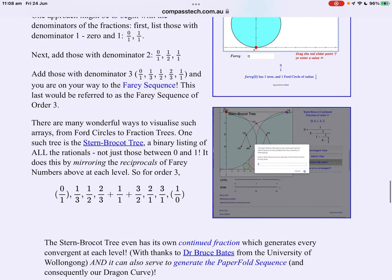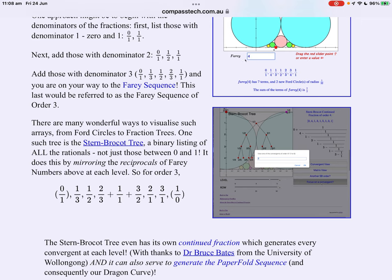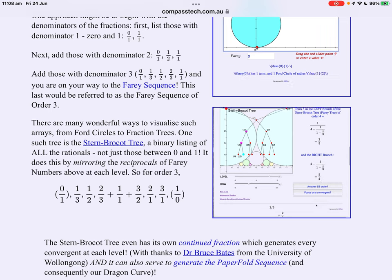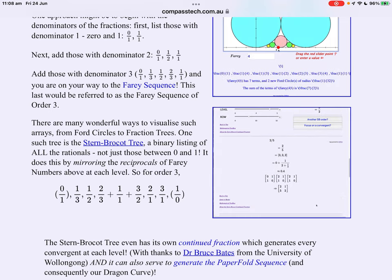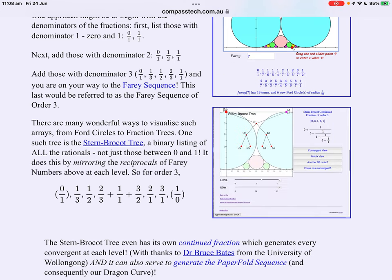Now another way to visualize these sequences is using what are called fraction trees. Now three in particular are well known, one's called the Farey tree, another the Stern-Brocot tree and another the Calkin-Wilf tree, and they all do the same thing in slightly different ways.